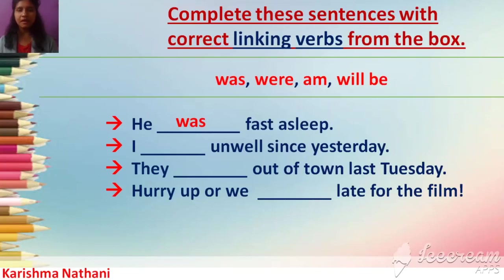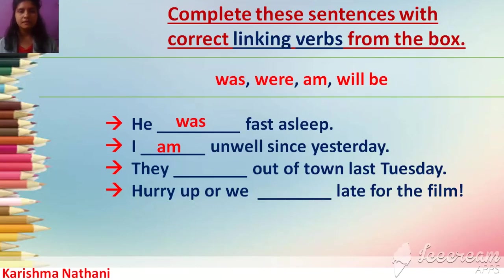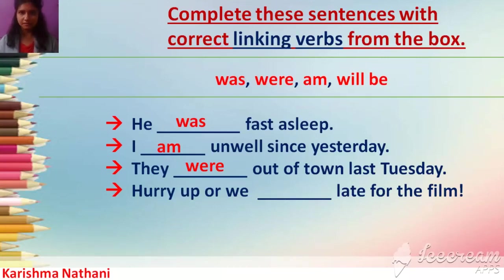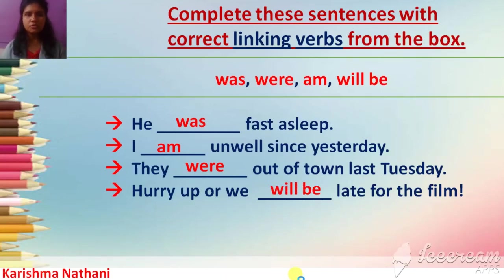'I ___ unwell since yesterday.' Answer: 'I am unwell since yesterday.' 'Am' shows present state. 'They ___ out of town last Tuesday.' Answer: 'They were out of town last Tuesday.' 'Were' shows past state. 'Hurry up or we ___ late for the film.' Answer: 'Hurry up or we will be late for the film.' 'Will be' shows future state.